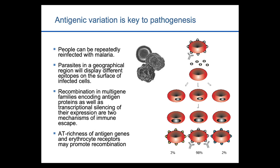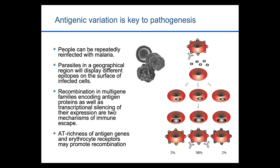You can get infected over and over again because parasites in a given geographical area will display a different set of epitopes on the surface of infected cells. The parasites can use recombination as well as silencing specific gene families to change the set of antigens displayed. You can generate antibodies to one type of parasite, and then the parasite will switch and make a new form — a minor population — to which you'll no longer have antibodies. This produces waves of parasitemia rising and falling.